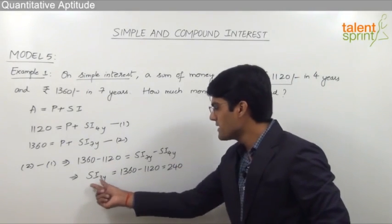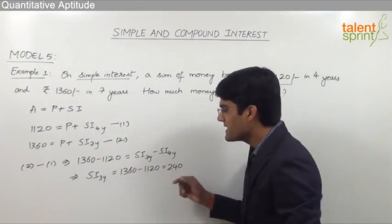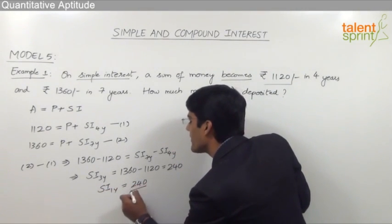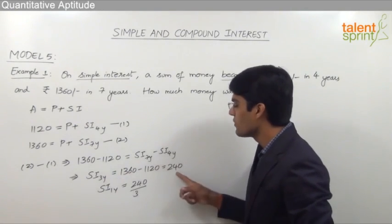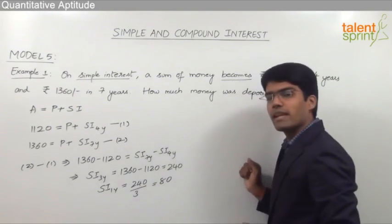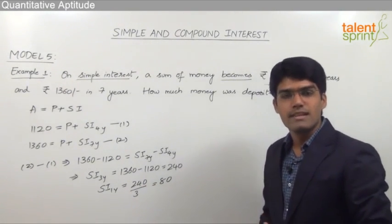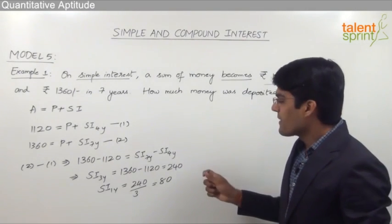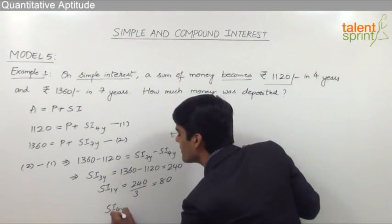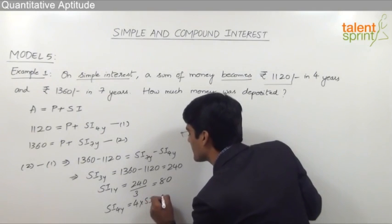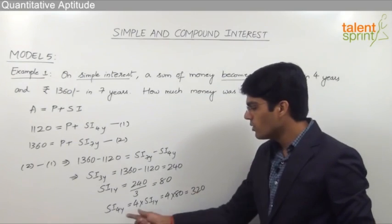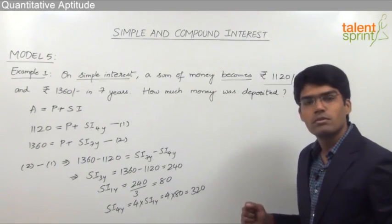So simple interest for 3 years equals 1360 minus 1120, which is 240 rupees. From this, simple interest for 1 year is 240 divided by 3, which equals 80 rupees. So every year the simple interest is 80 rupees. Simple interest for 4 years would be 4 times 80, which equals 320 rupees.